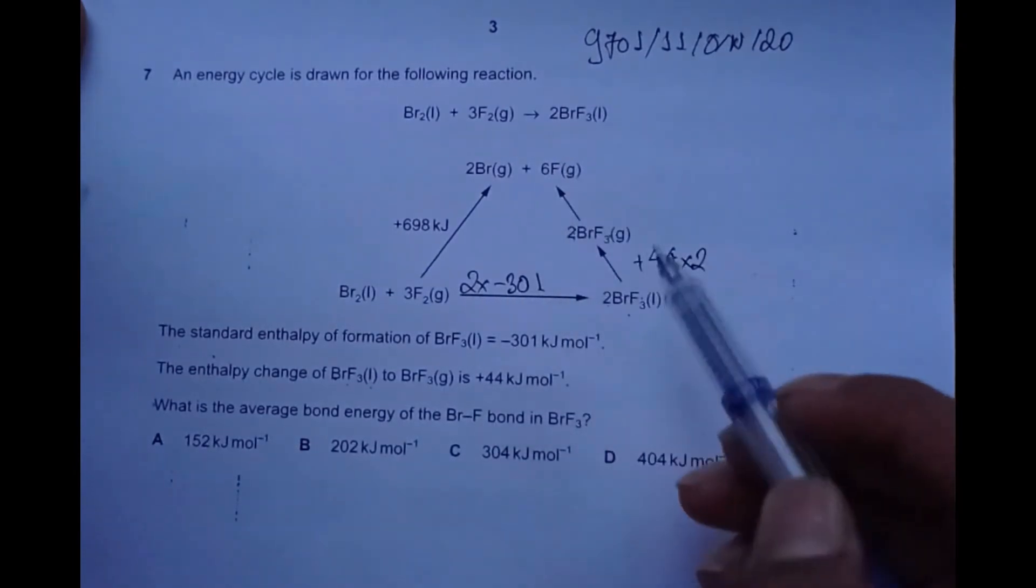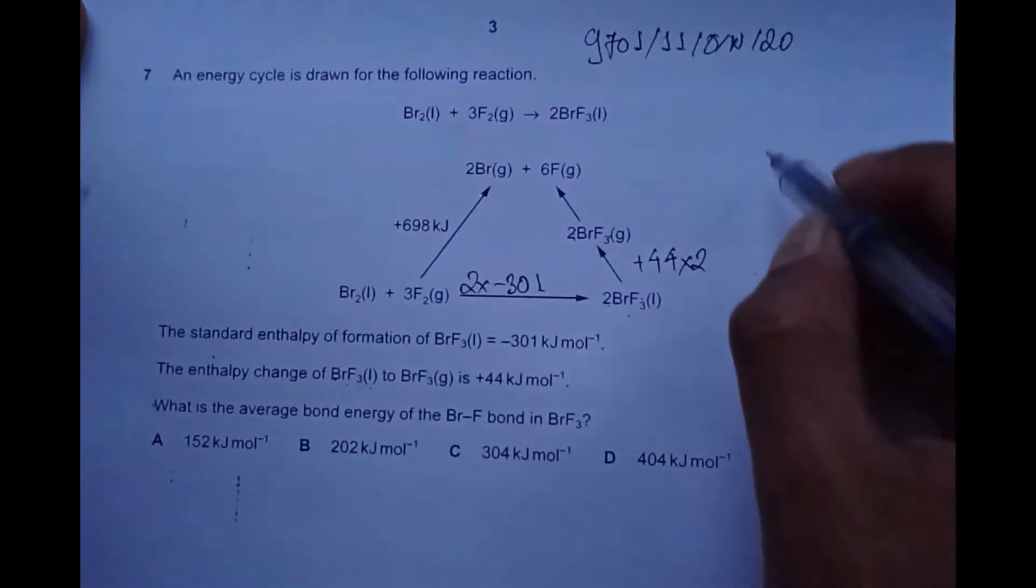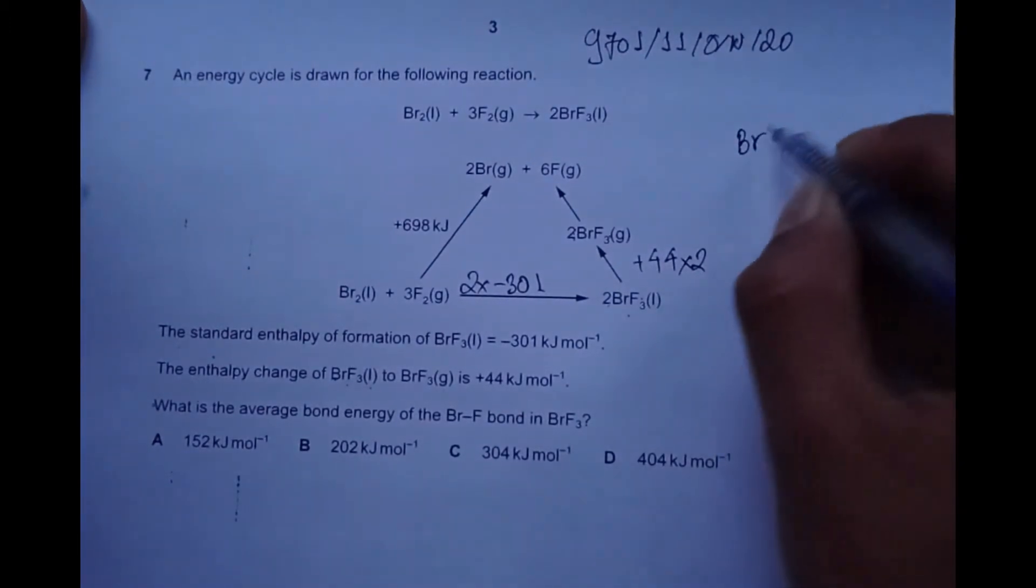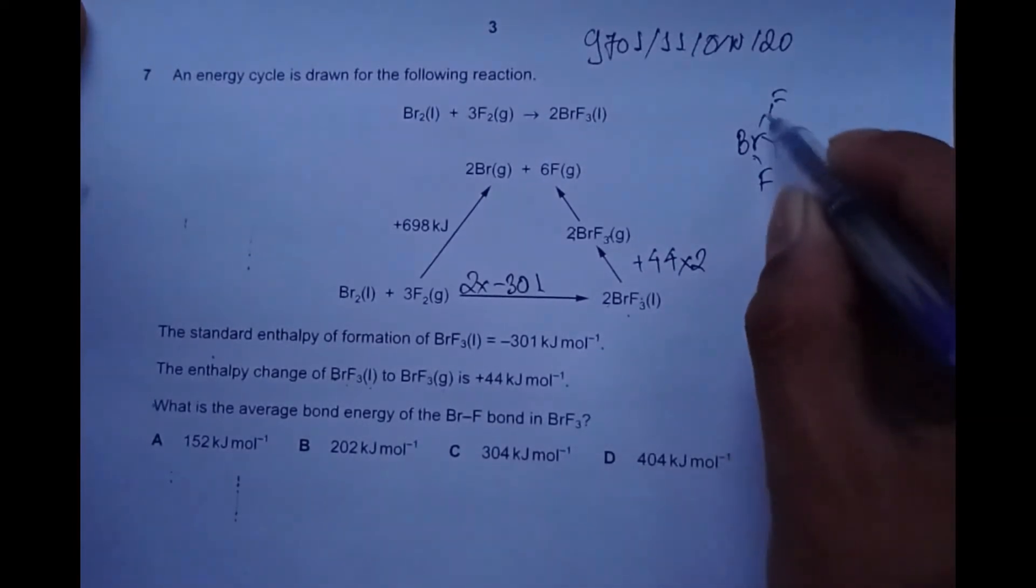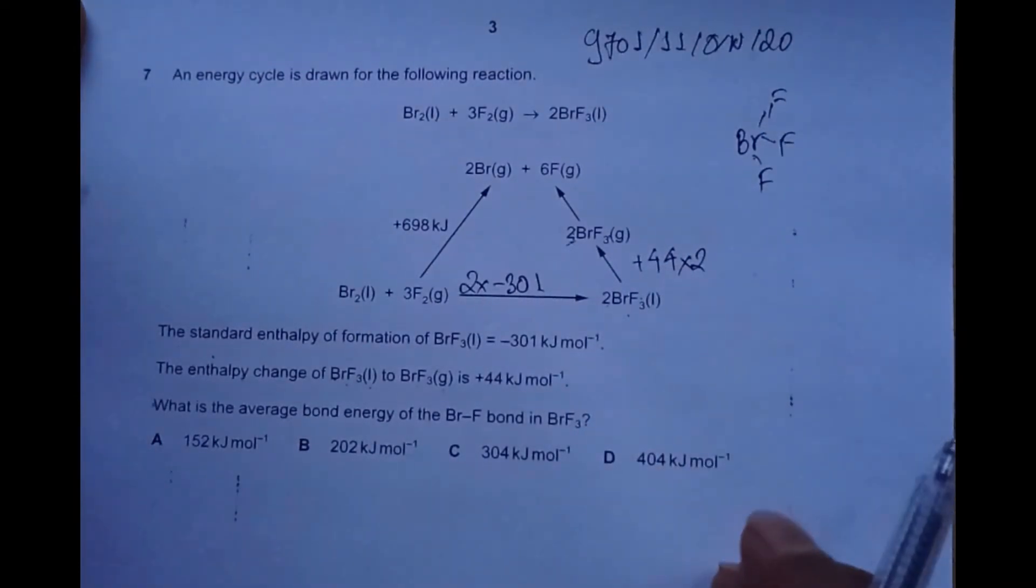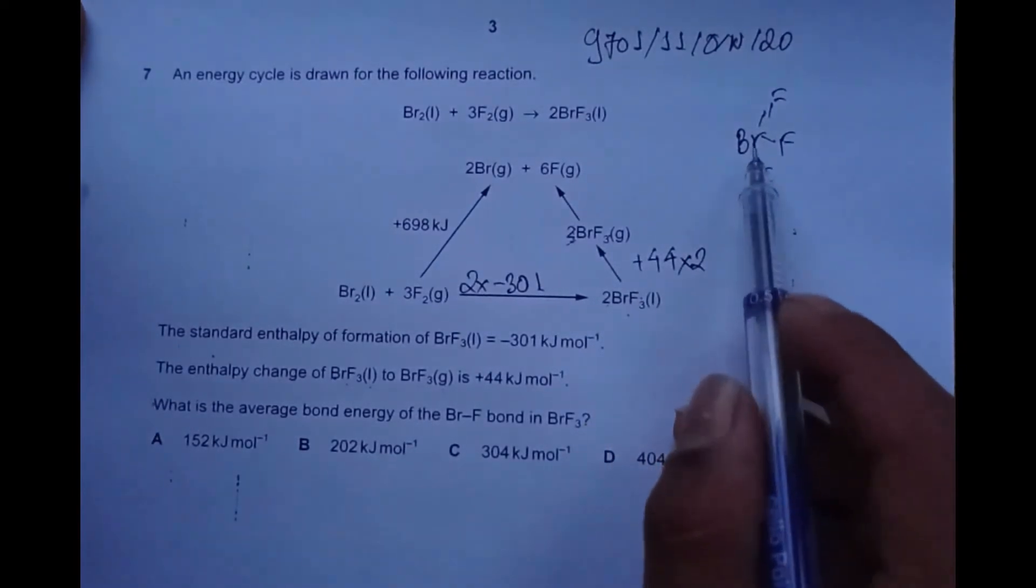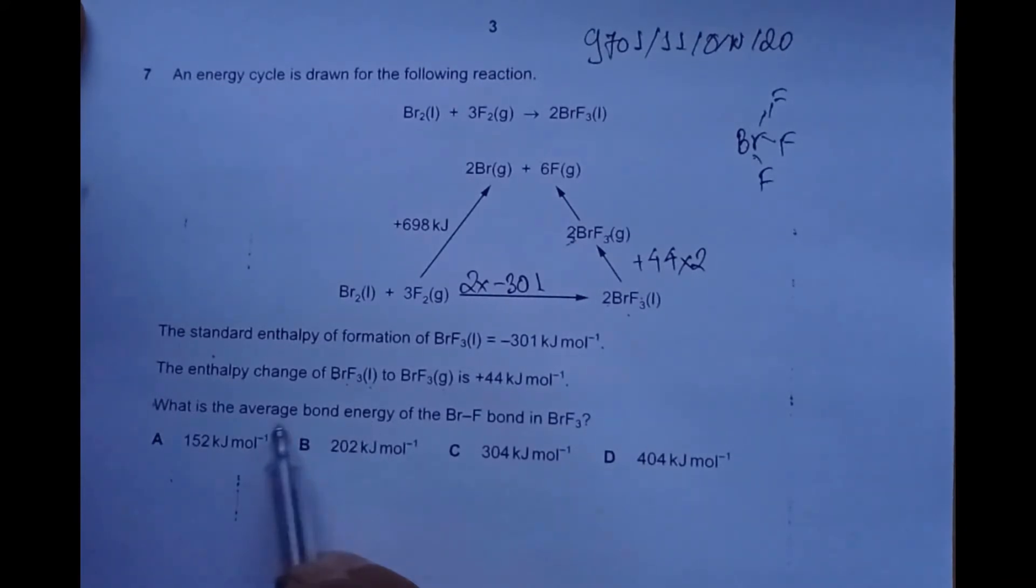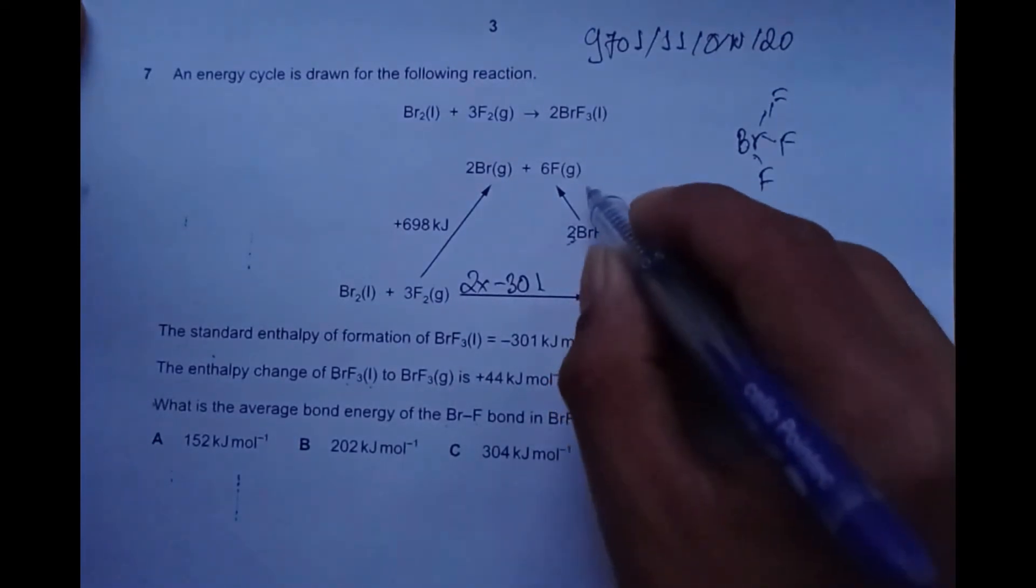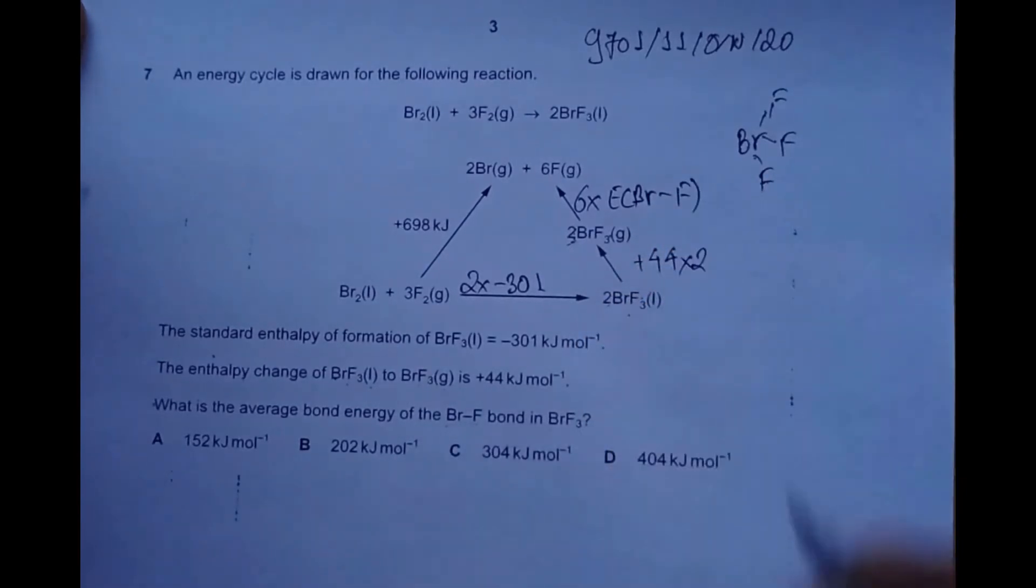For the conversion, we need to consider the number of bonds that have been broken. BrF3 has the structure Br-F-F-F, meaning three bonds. Two moles of BrF3 means a total of six bonds have been broken. The question asks us to find the average bond energy of the Br-F bond in bromine trifluoride. This would be six times the bond energy of the Br-F bond.